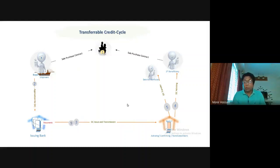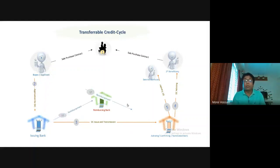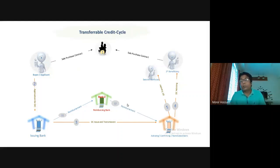After reimbursement, the nominated bank calculates and deducts the first beneficiary's value from the second beneficiary's invoice. After netting or reducing all charges, it reimburses the second beneficiary. So this is the transferable credit life cycle.